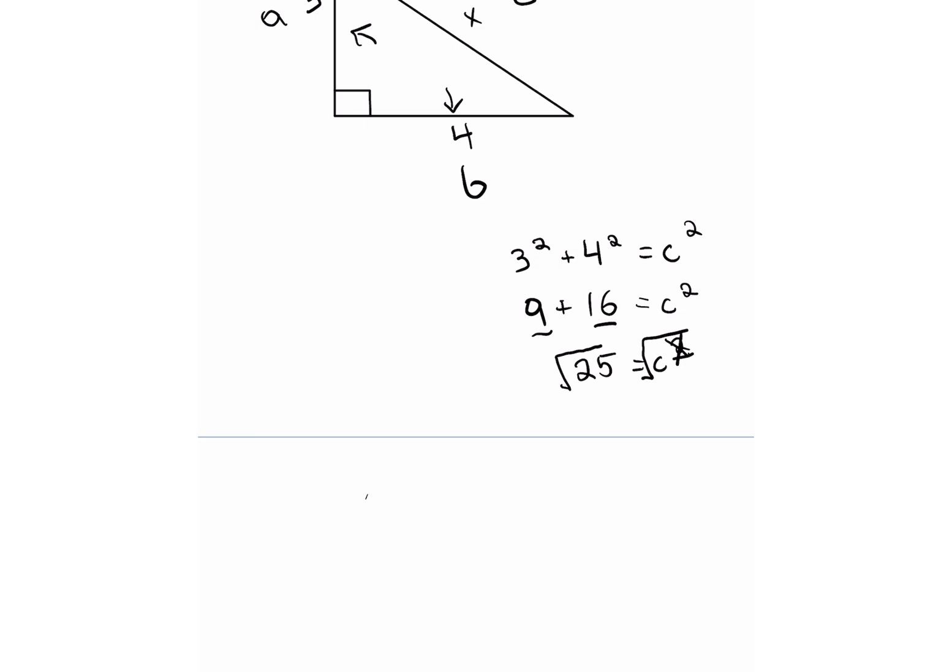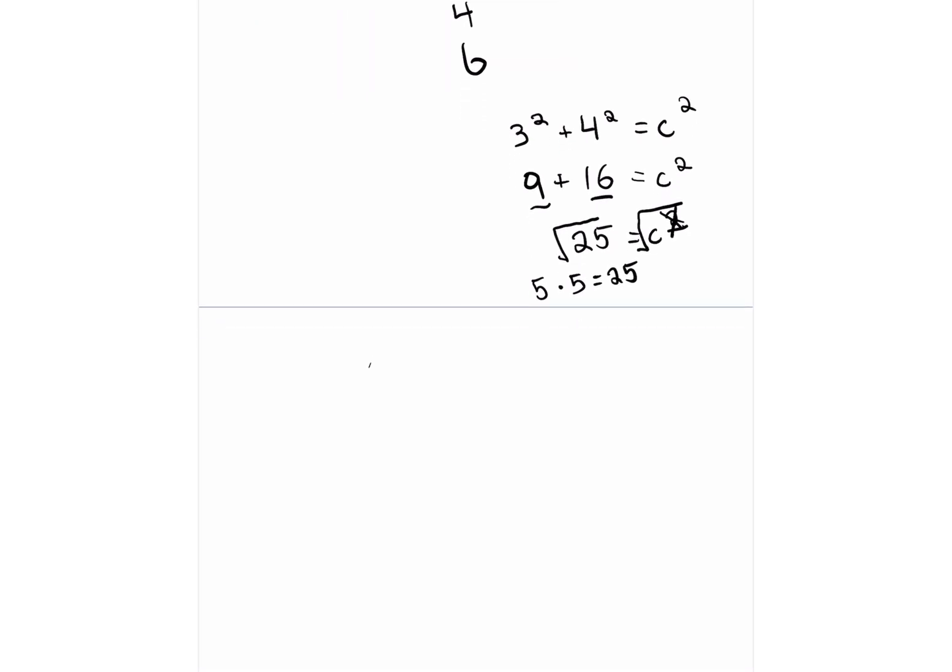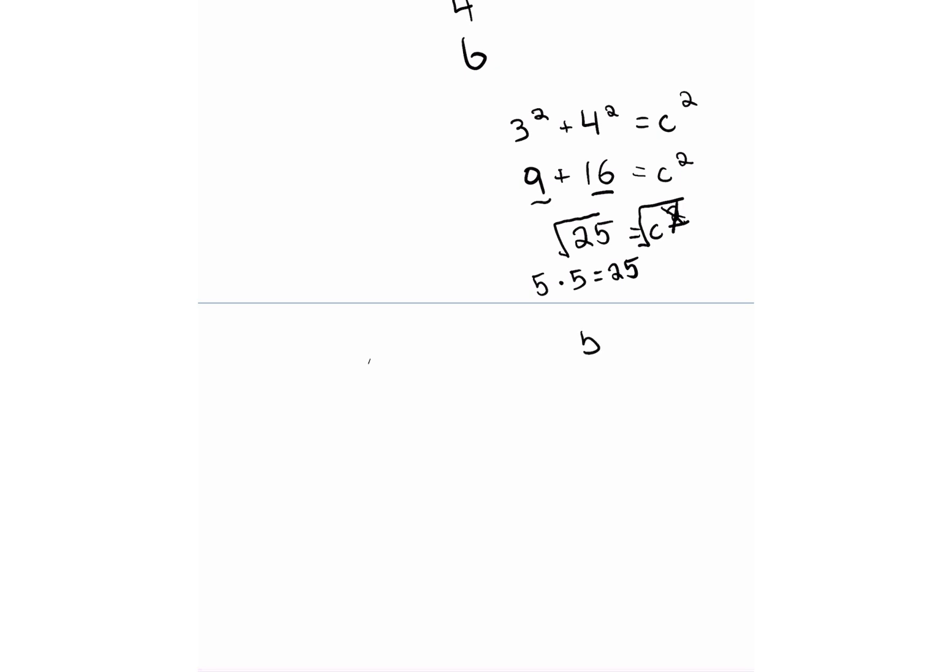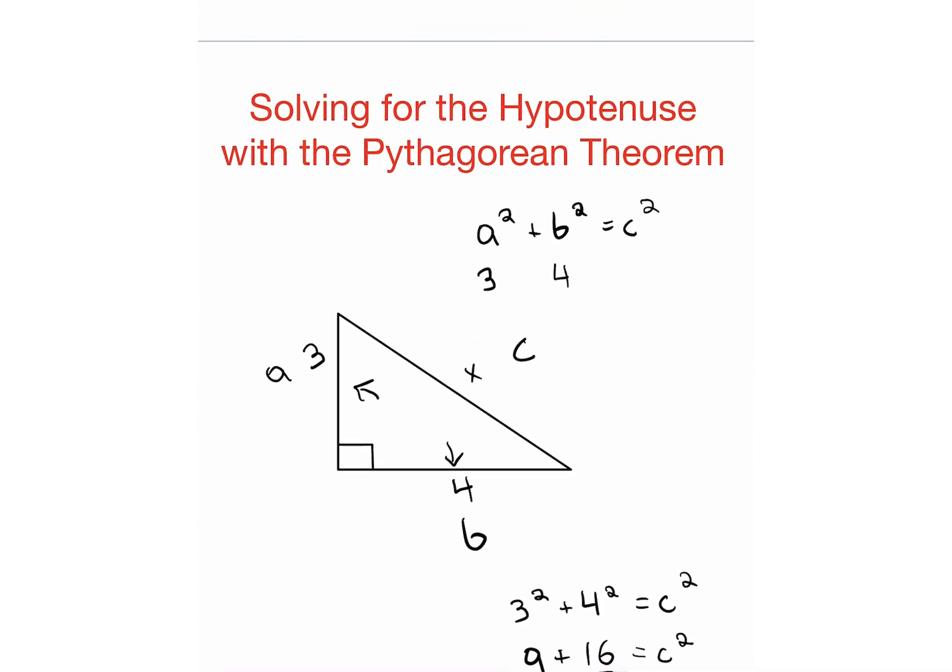we're finding the square root of 25, which is 5, because 5 times 5 equals 25, and we've gotten rid of that second power in C. So 5 equals C, or C equals 5. So we found out that if this side is 3, and this side is 4, then that means this third side, or hypotenuse, must equal 5.